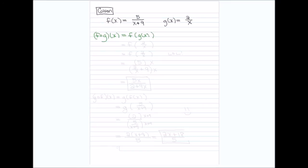Let's try a more complicated example to see how things work the same way. I need to find F composition with G, so I rewrite it as F of G of X. I replace the G of X — the innermost function — with two over X. Now that means go to the F function and wherever you see X, put two over X, so in the denominator I put (two over X) plus nine.